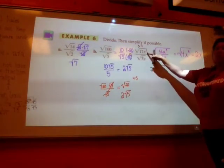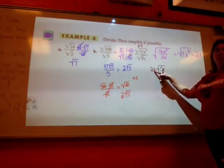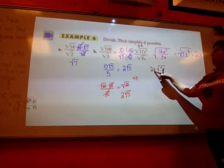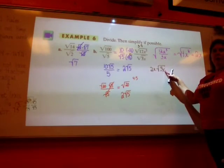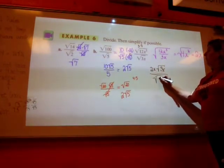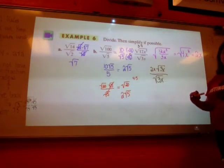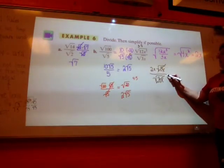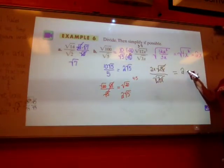4 is going to become 2. 2 will go into here 2 times. Or one time of one left over. Right? And then you kept that over the square root of 3x.